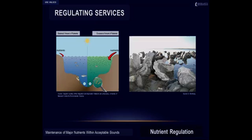Nutrient regulation is the role of nature in maintaining major nutrients within acceptable limits. Oysters, for example, filter large amounts of organic matter from the water column via nitrification and the absorption of nutrients into the tissues and shells. This leads to a more balanced level of nutrients and improved water quality. On the other hand, as shown in the diagram on the left, an excessive amount of nutrients can stimulate an overgrowth of algae, which then sinks and decomposes in the water. This process consumes oxygen and diminishes the supply available to healthy marine life. This is commonly referred to as the dead zone because most marine life either dies or leaves the area. Nutrient regulation is therefore crucial for healthy marine life.